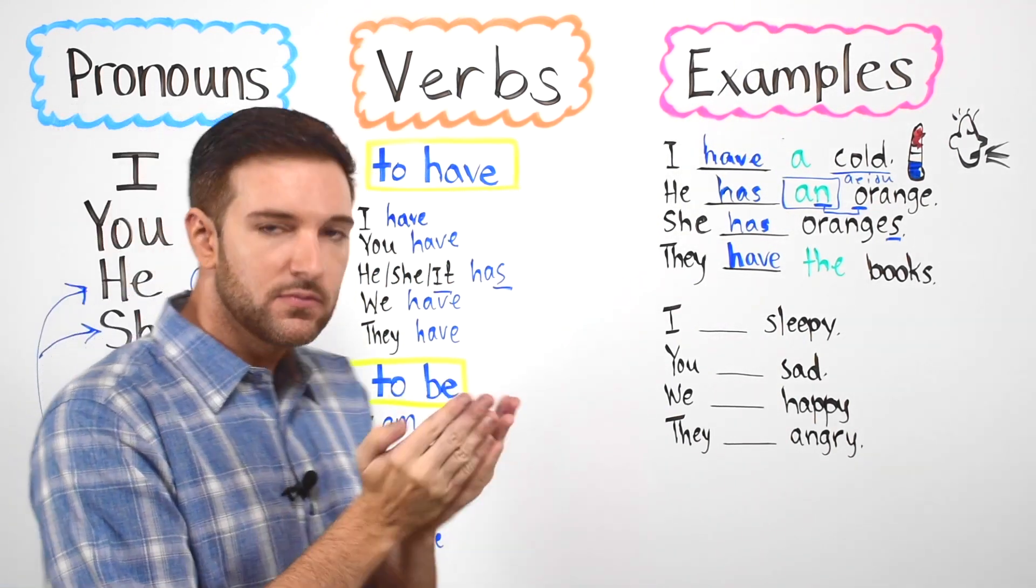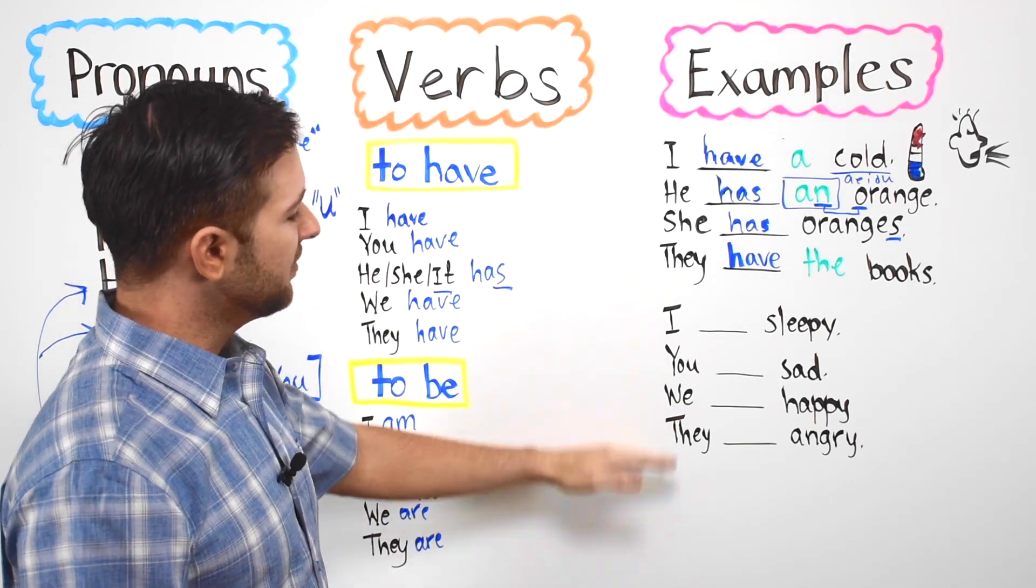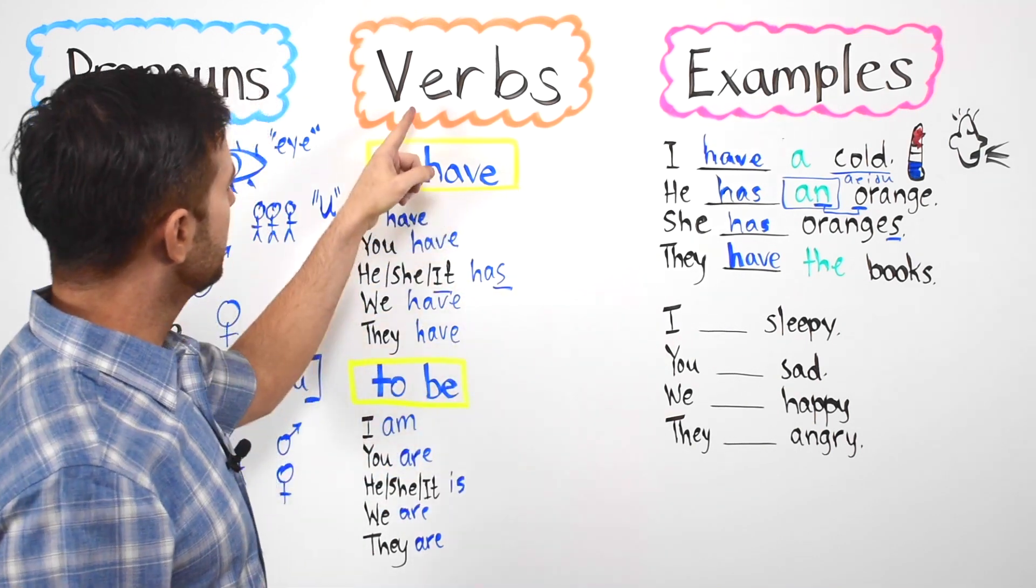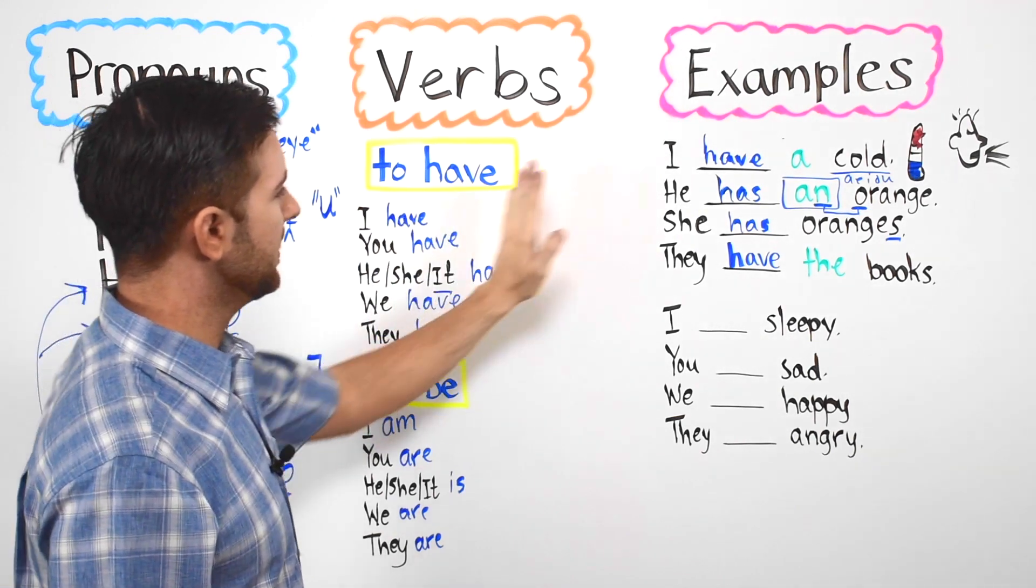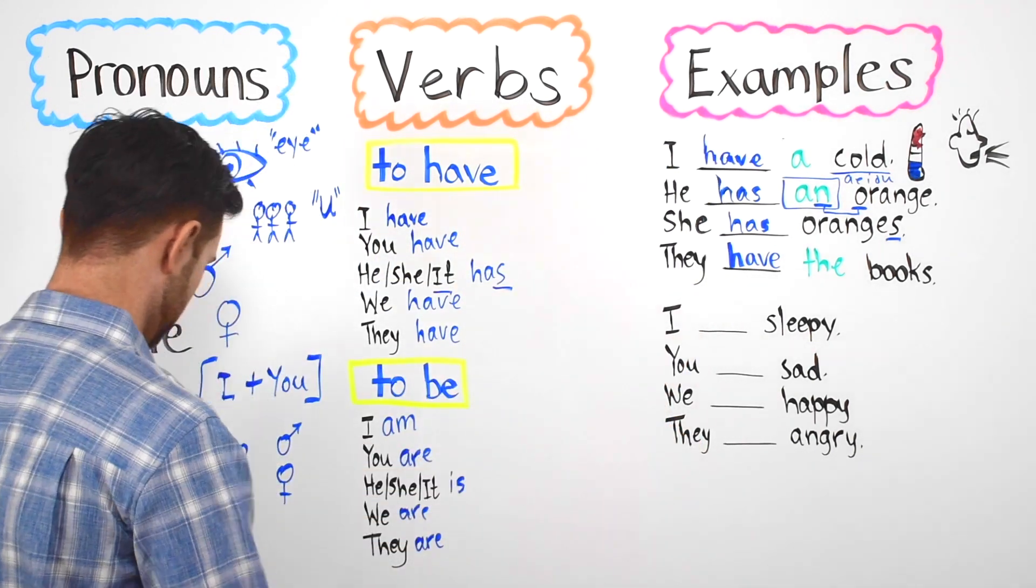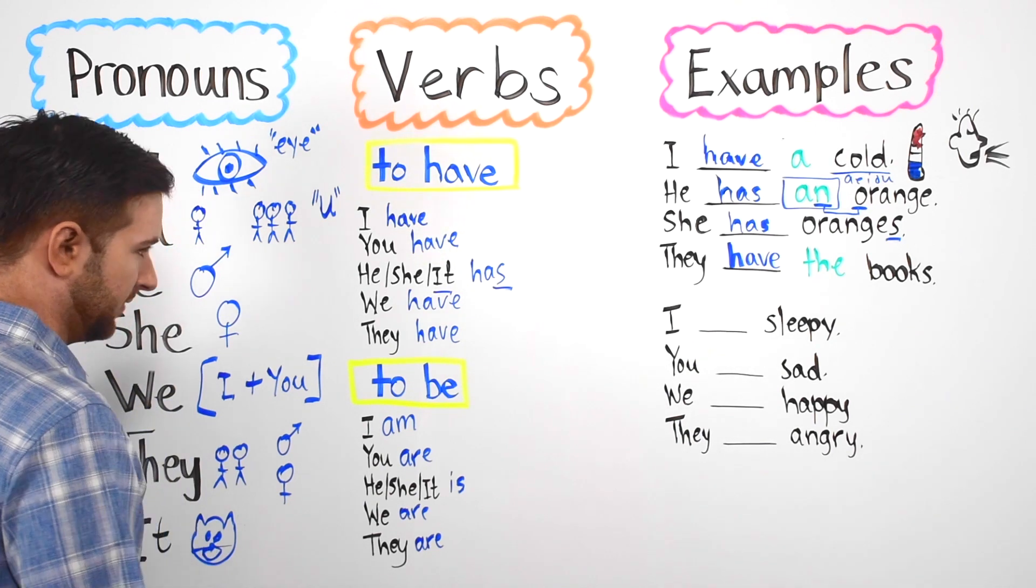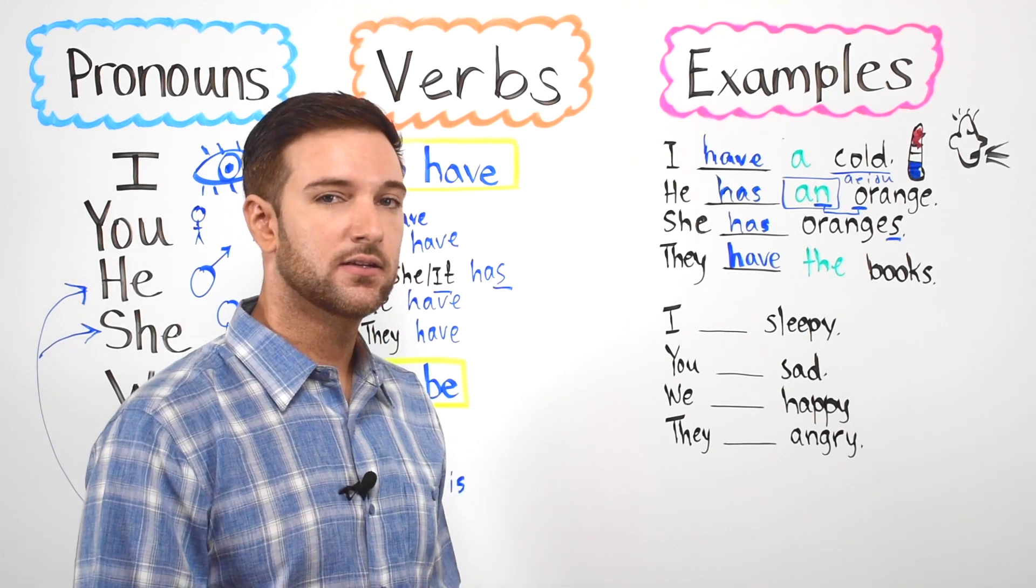So again let's read it. I have a cold. He has an orange. She has oranges and finally they have the books and you know what books are, you read books.